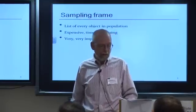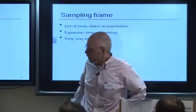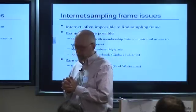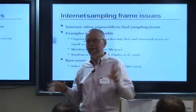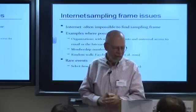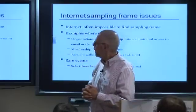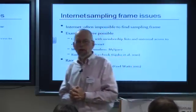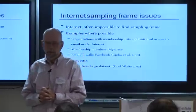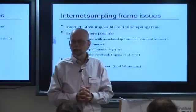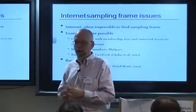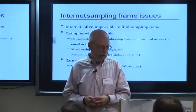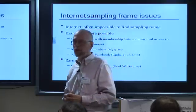Sampling frames are also often biased in a variety of ways. On the Internet, there are a series of fairly specialized sampling frame issues. For example, on the Internet it's often impossible to find any sort of reasonable sampling frame. You can try to figure out a way to sample all blogs or all web pages, and the answer is there's just no way to do it. No one has a representative sample of blogs, no one has a representative sample of political blogs, no one has a representative sample of web pages, because it's impossible to create a sampling frame.